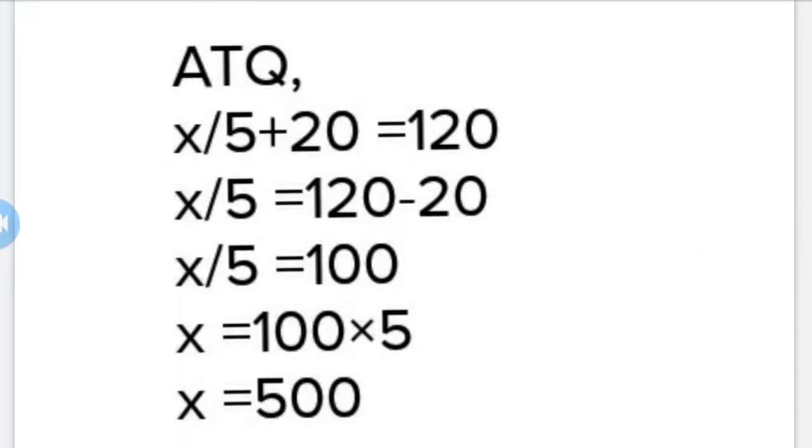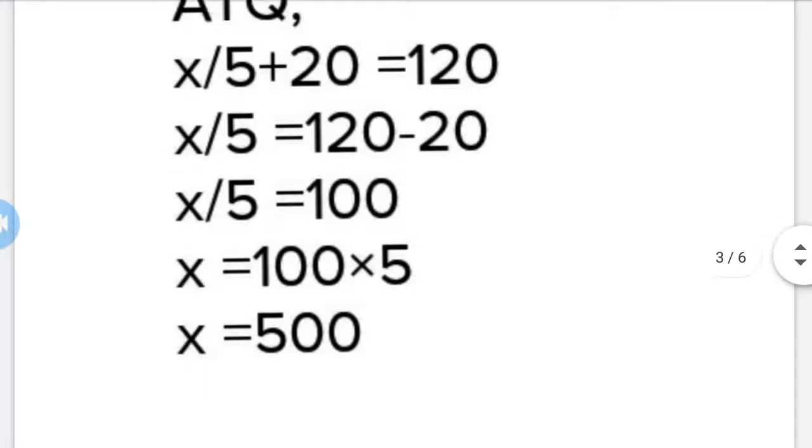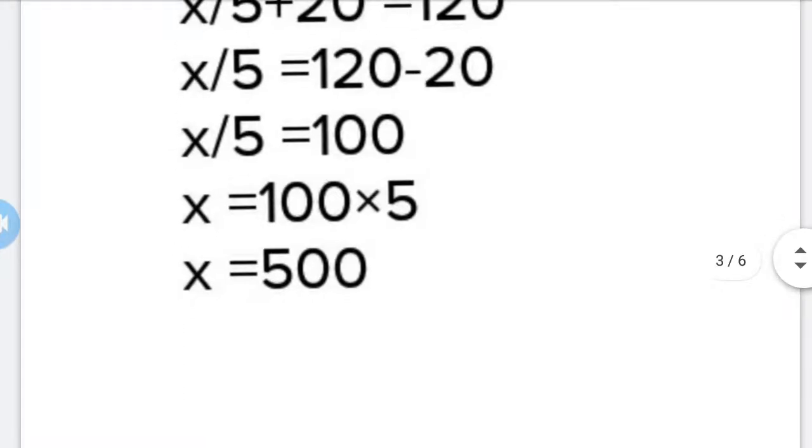Solving this equation: x/5 = 120 - 20, which gives x/5 = 100. When we cross-multiply, x = 100 × 5 = 500. This is our answer.